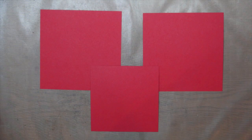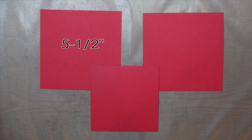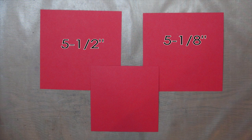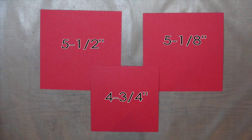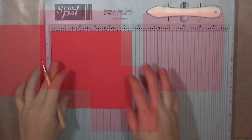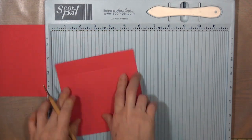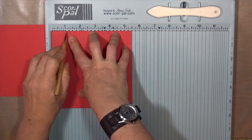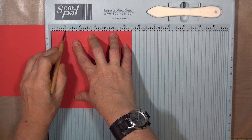To begin you'll need 3 squares of cardstock in your school colors. One is 5 1/2 inches, the second is 5 1/8 inches, and the third one is 4 3/4 inches. We'll start with the 5 1/2 inch, and this is going to be the base of the box, and we're going to score this piece at 1 inch on all 4 sides.